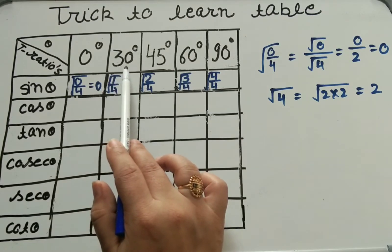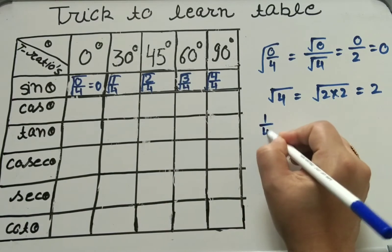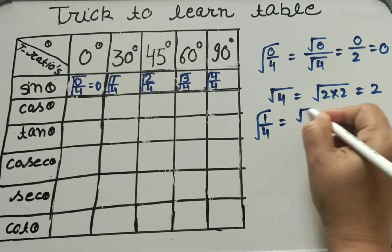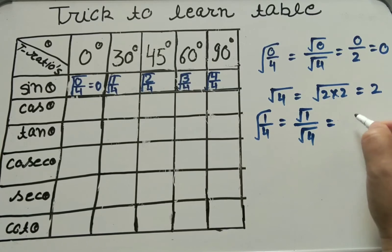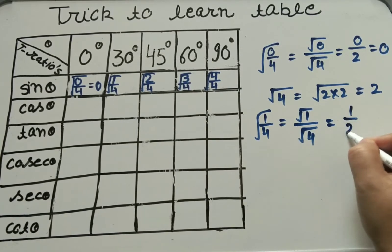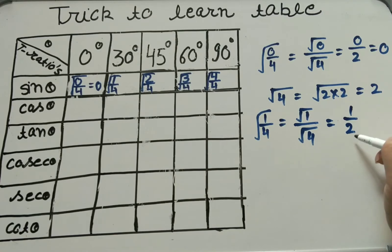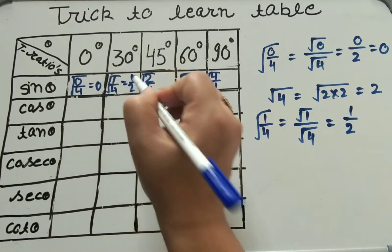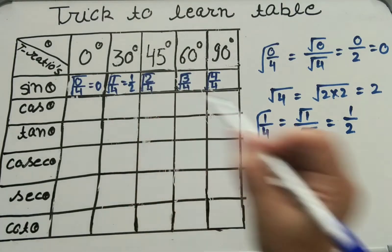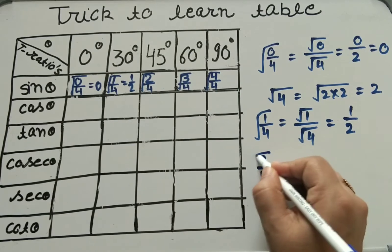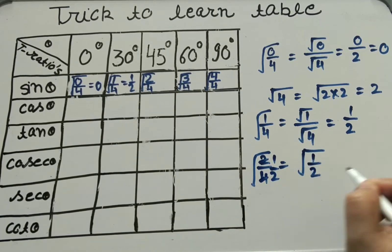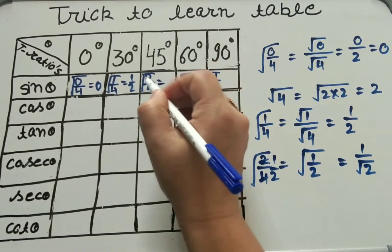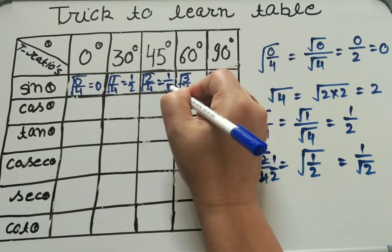Next we solve sin theta for 30 degrees: under root of 1 upon 4. We can write under root 1 upon under root 4. Under root 1 equals 1 and under root 4 equals 2, so the value is 1 by 2. For 45 degrees, under root of 2 upon 4 — we can cancel to get under root 1 by 2, which equals 1 upon under root 2.